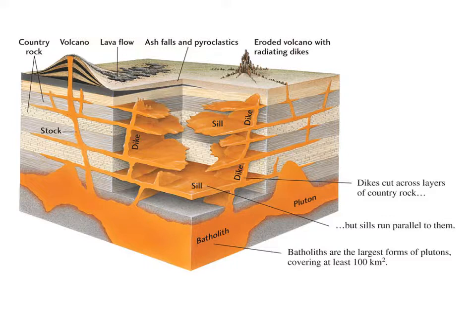So let's look at some of the landforms that are formed by these rocks and how igneous rocks actually form. Here's a nice diagram showing an area that's got active volcanic activity. We have molten magma coming up through the crust and intruding, creating what we call igneous intrusions.